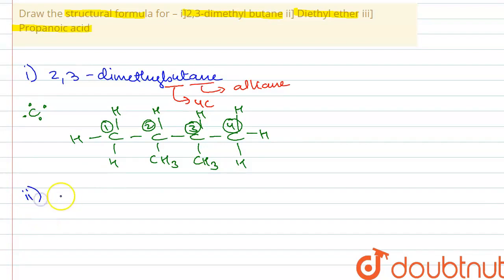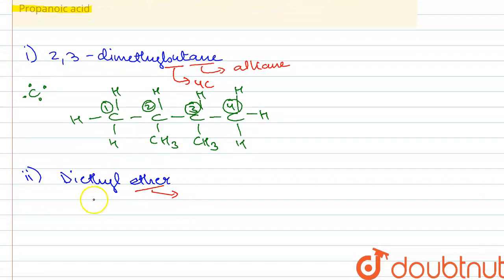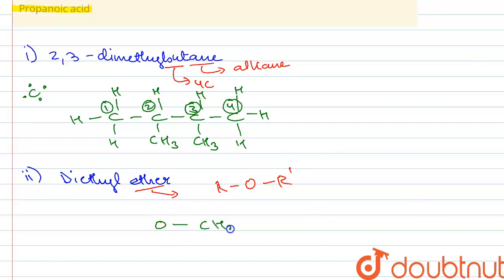The second compound is diethyl ether. From the suffix itself we can see that it is an ether, so an ether functional group is going to be attached. The ether functional group is R-O-R. There are two ethyl groups — one on each side of the oxygen — so the structure is: CH₃CH₂-O-CH₂CH₃.